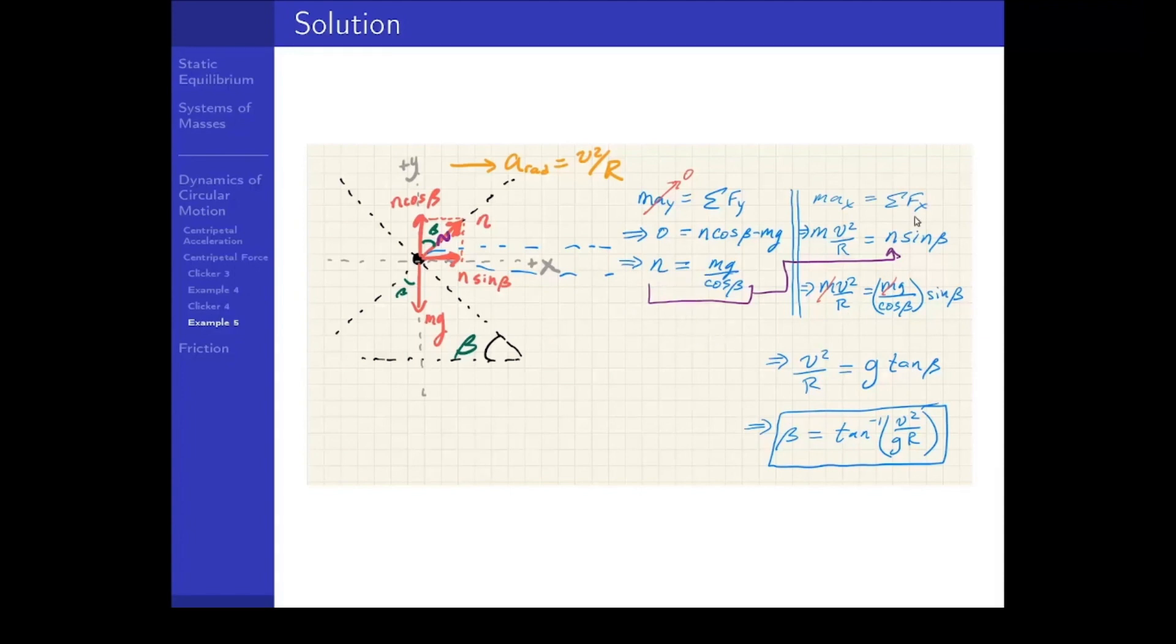Likewise, in the x direction, the sum of the forces is ma. And the acceleration in the x direction is v squared over r. In the x direction, we have the force of n sine beta. We can replace that n with what we found previously. We notice that the masses drop out. And we see that we have sine of beta over cosine beta, which gives us tangent.